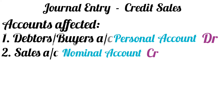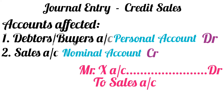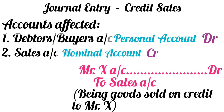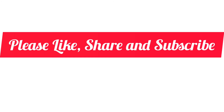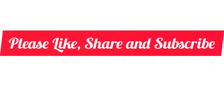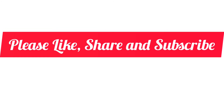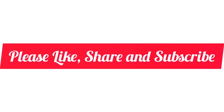For example, if you have sold goods on credit to Mr. X, then the journal entry will be: Mr. X's account debit to sales account. The narration will be: being goods sold on credit to Mr. X. You can check out other journal entries, the links for which are given in the description below.